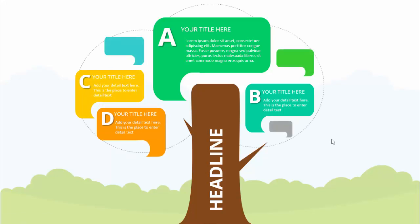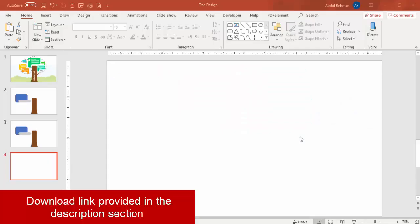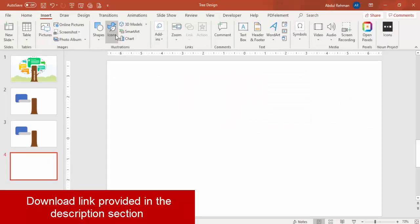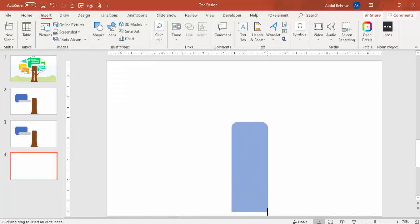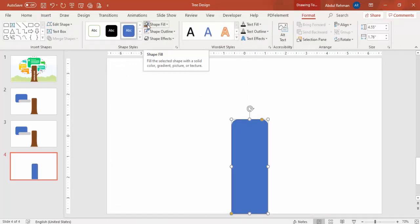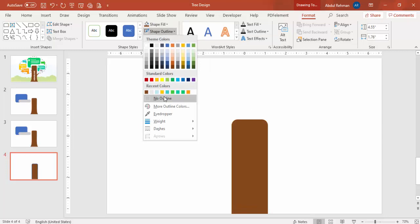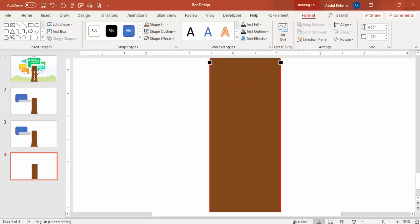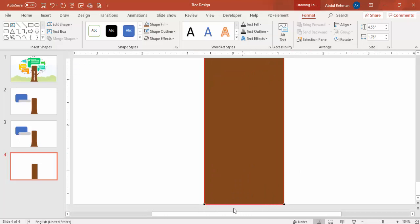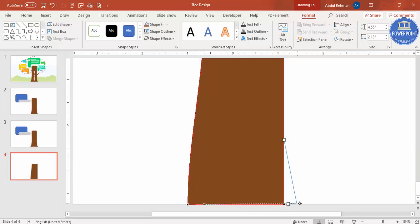Let's see how to do this creative slide in PowerPoint. Add a new slide, then go to Insert > Shapes and select the top corner rounded rectangle. Draw it to the desired size, apply a brown shape fill, and set shape outline to no outline. Now I want to expand the base — right mouse click, Edit Points, zoom in a little, and you can see the four points.